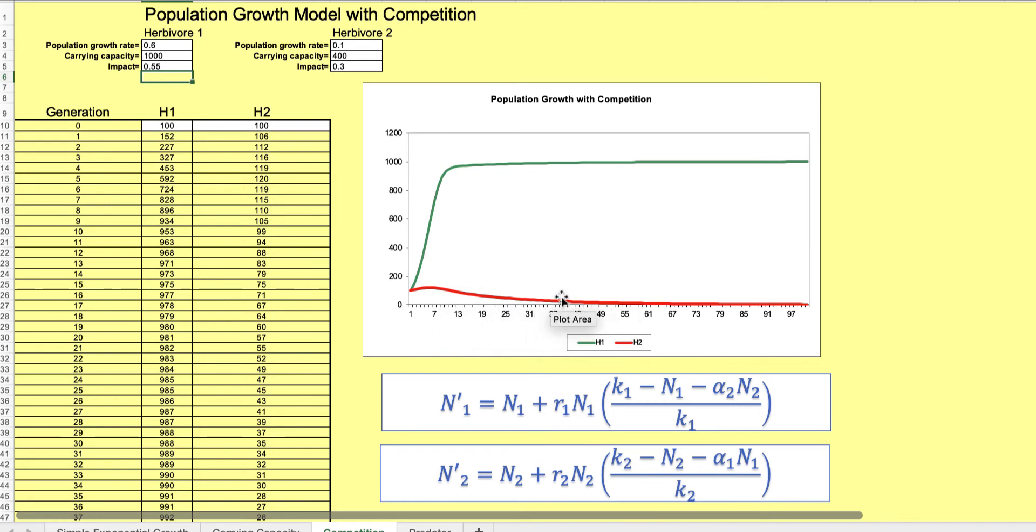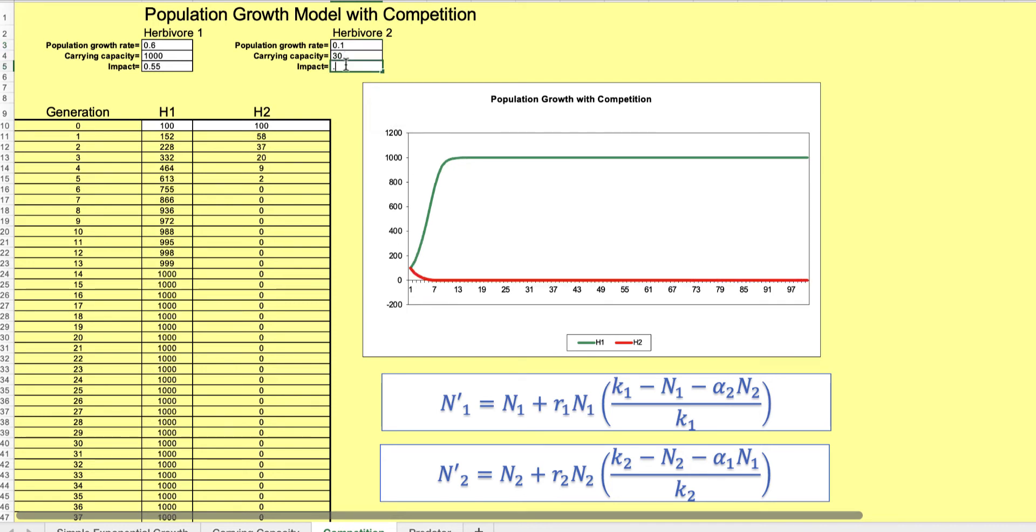If the cows have a population growth rate not nearly as fast, it can only hold 30 of them, and their impact is 0.1, they don't make it right.